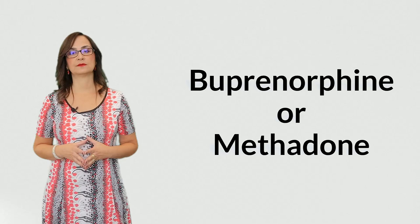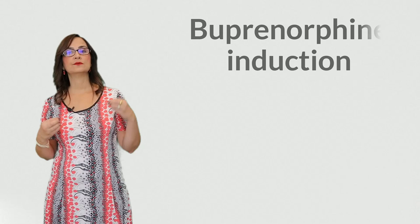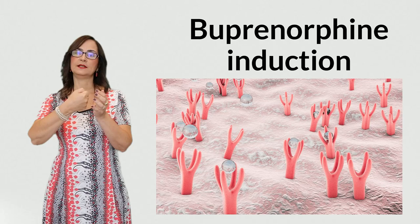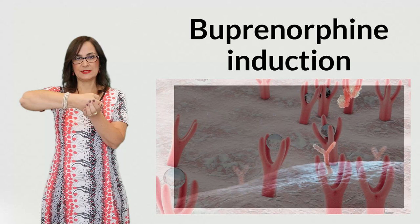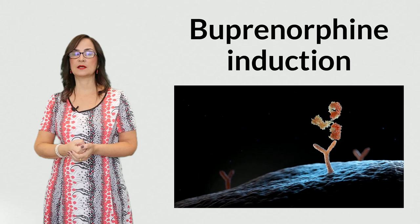Buprenorphine can be abused and it can cause overdose, but these are rare and much less than with methadone. When we want to rotate from another opioid to buprenorphine, we use a method called induction. Because buprenorphine has a high affinity to the opioid receptor, this means that when it links to the receptor in the body, it does not let another opioid connect to that receptor.